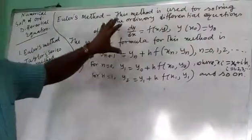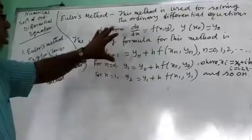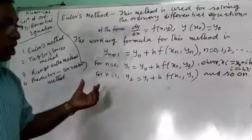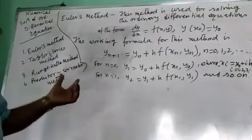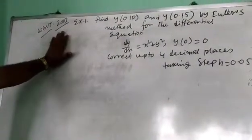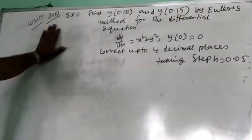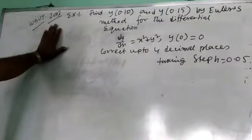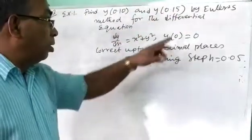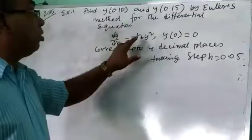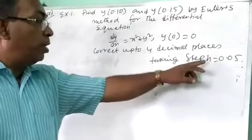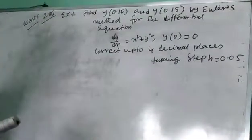Using this method, we will now do some problems. I am choosing a sum that is very important for the exam — this is a previous year university exam sum. Find y(0.10) and y(0.15) by Euler's method for the differential equation dy/dx equal to x² plus y², and y(0) equal to 0, up to 4 decimal places, taking step size h.